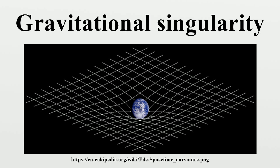Types — Curvature: Solutions to the equations of general relativity or another theory of gravity often result in encountering points where the metric blows up to infinity. However, many of these points are completely regular, and the infinities are merely a result of using an inappropriate coordinate system at this point. In order to test whether there is a singularity at a certain point, one must check whether diffeomorphism invariant quantities become infinite at that point. Such quantities are the same in every coordinate system, so these infinities will not go away by a change of coordinates.